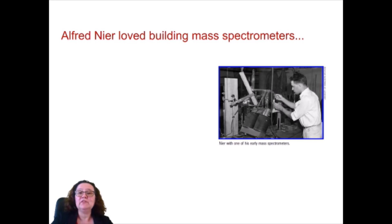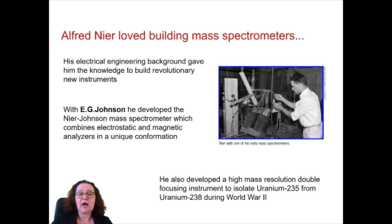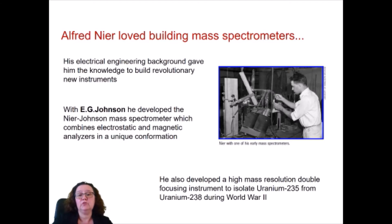This gentleman is called Alfred Nils, and he was an electrical engineer whose knowledge of building machines really helped improve those early versions of mass spectrometers. In collaboration with another scientist, Johnson, he developed a mass spectrometer which had a combination of electrostatic and magnetic analyzers to improve the creation and deflection of ions in the system, resulting in a high mass resolution instrument. During the Second World War he was able to isolate two isotopes of uranium, 235 from 238.